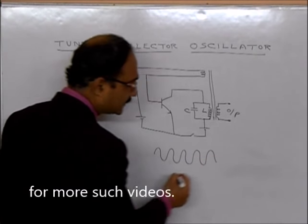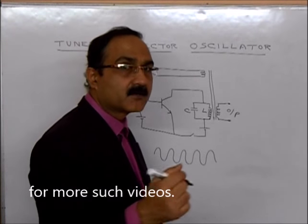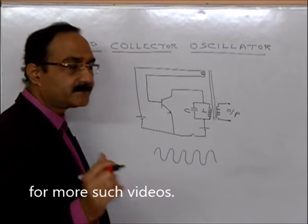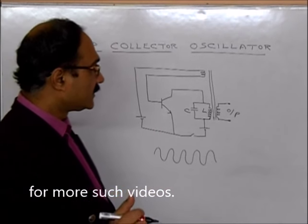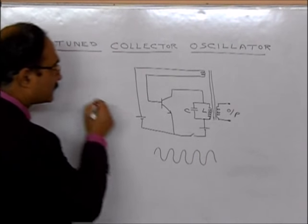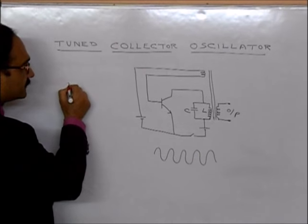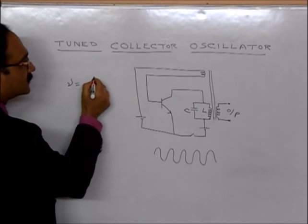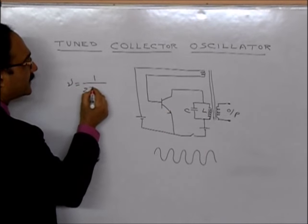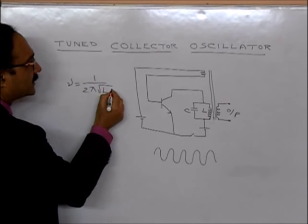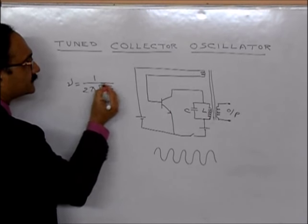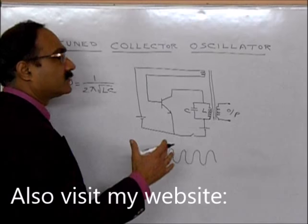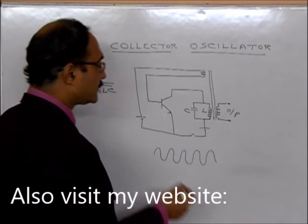The amplitude of this oscillation remains constant. The frequency of this oscillation — since this is an LC circuit — is given by 1 divided by 2π times the square root of LC.